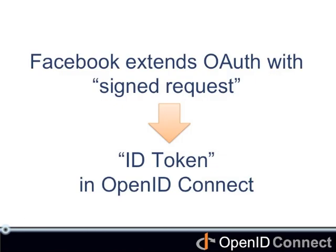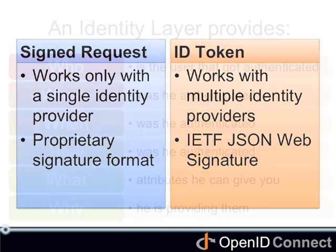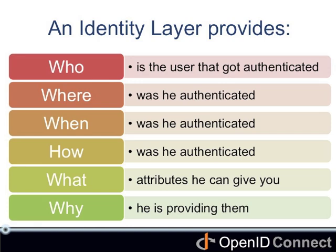Facebook's case is different. They don't use OAuth for authentication as-is, but have built an extension called signed request, which is essentially the same as OpenID Connect's ID token, except that it works only with Facebook as the identity provider and the signature format is proprietary. While OpenID Connect works with multiple IDPs and uses IETF's JSON Web Signature standard. In essence, what it does is provide the websites with who got authenticated, where, when, and how it was, what attributes the user wants to give to you, and why — all defined in an interoperable manner.